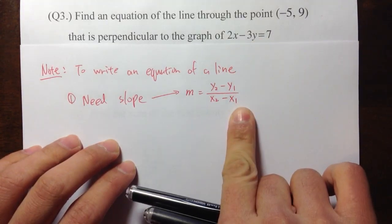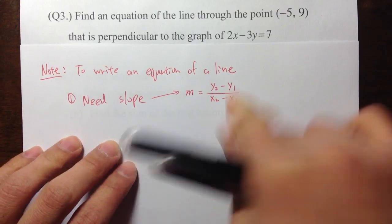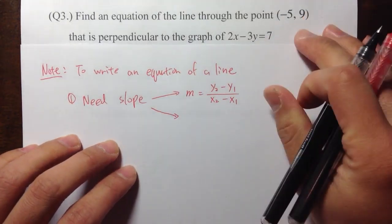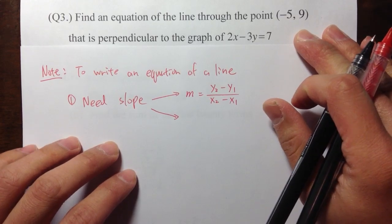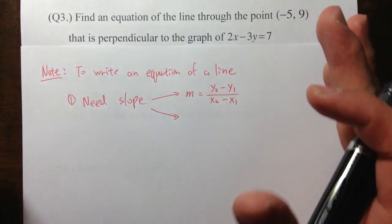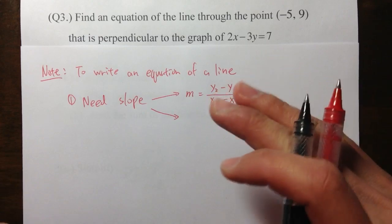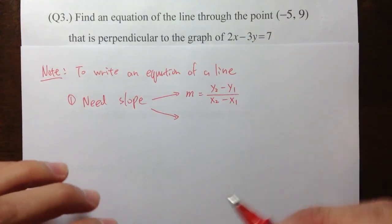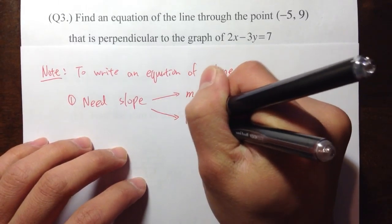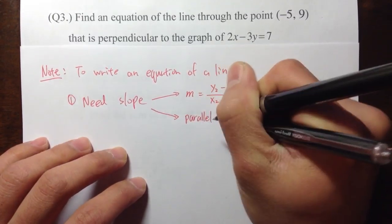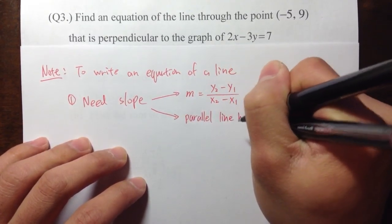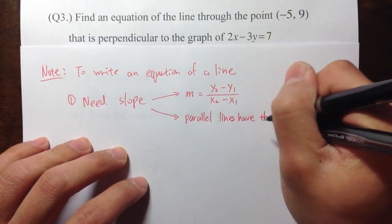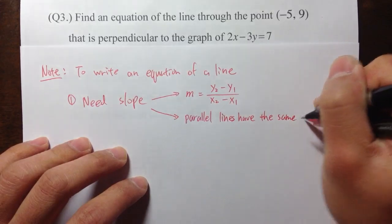If we don't — for example, in this case we only have one point — then we have to know how to find slope when we have parallel lines or perpendicular lines. For parallel lines, that's the easier case: parallel lines have the same slope.